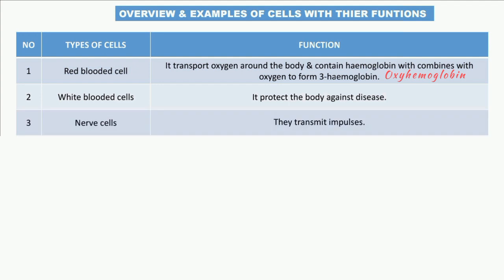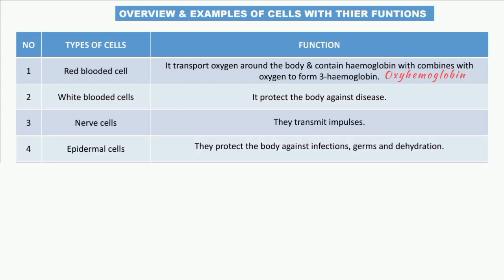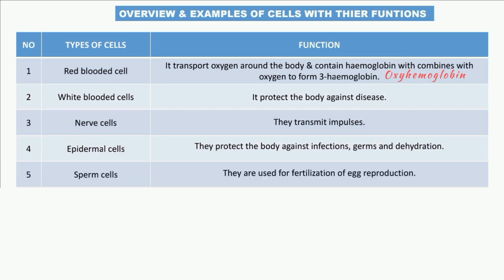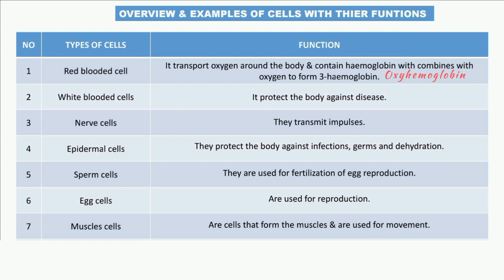Nerve cells transmit impulses throughout the body. Epidermal cells protect the body against infection, germs, and dehydration. Sperm cells are used for reproduction and fertilization. Egg cells are the female reproductive cells also used in reproduction. Muscle cells form muscles and are used for movement.